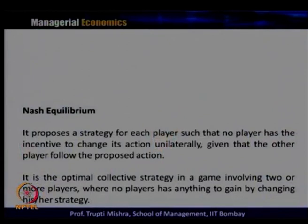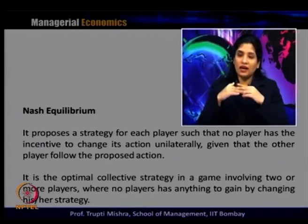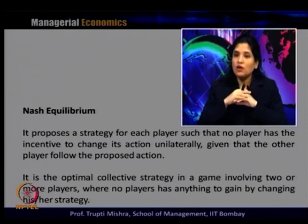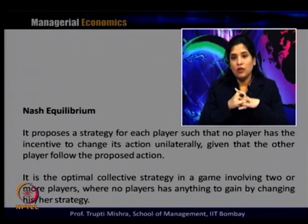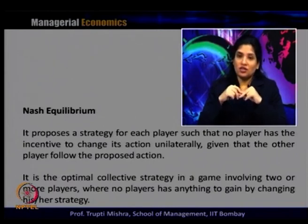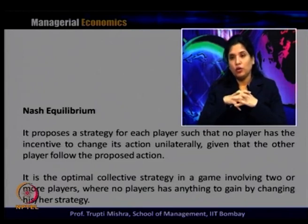Nash equilibrium proposes a strategy for each player such that no player has the incentive to change its action unilaterally, given that other players follow the proposed action. It is an optimal collective strategy in a game involving two or more players where no player has anything to gain by changing their strategy. Equilibrium is a state of balance — beyond it, there is no incentive for the firm to deviate because that is where they get the maximum positive outcome.